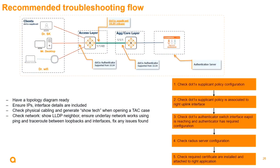For troubleshooting, first have your topology diagram ready — know what clients are connected, where your switch is, and whether it's directly connected to the authenticator or farther away. Make sure you know the physical topology and check all IP addresses, whether you've configured your RADIUS server properly, and whether the EST download certificate IP is configured and the EST server is reachable.